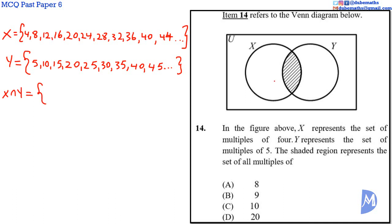And it's the elements that are common to both X and Y. The elements that are common to X and Y are 20, 40, and so on. It stands to reason that the elements of X intersect Y would continue 60, 80, 100, and so on.